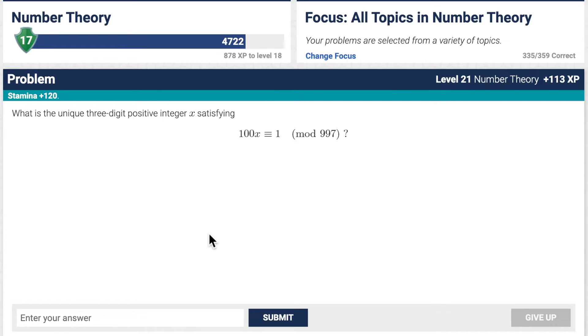Right, so these problems, how you approach it is just usually try a few values of x and see what happens. You'll notice that if we set x to 10, then it will become 1000, which is 3 mod 997. So then, what we can do is: if x equals 10, then that means 100x is 3 mod 997. So I don't have a congruent symbol so I'll just use the equal symbol. What we can do is find the multiplicative inverse of 3 mod 997, which is actually pretty easy to find because 3 is quite a small number.